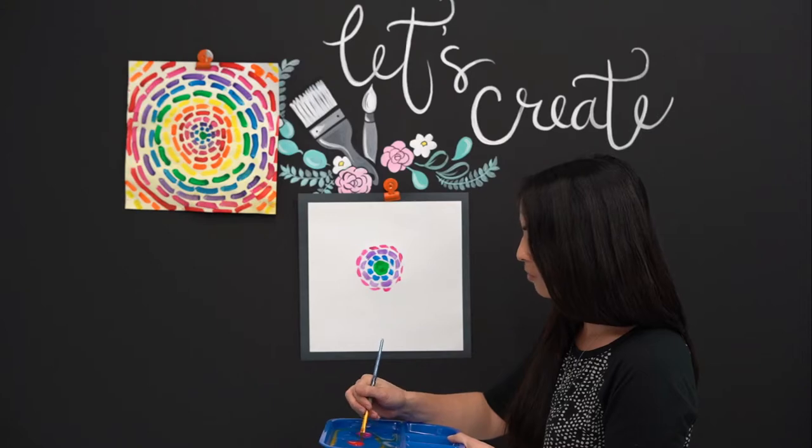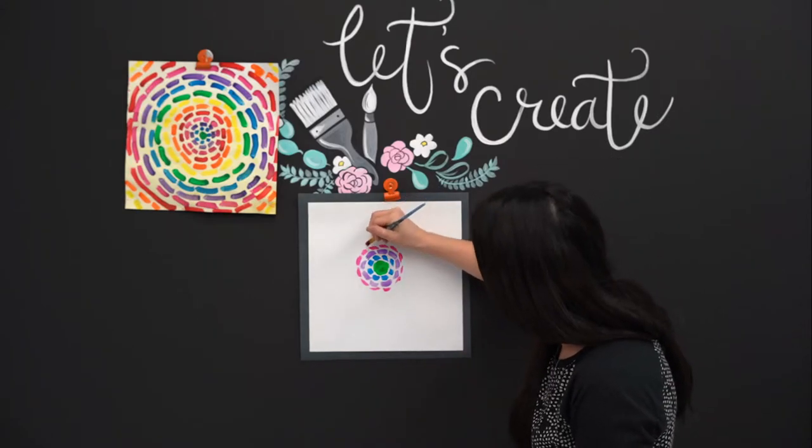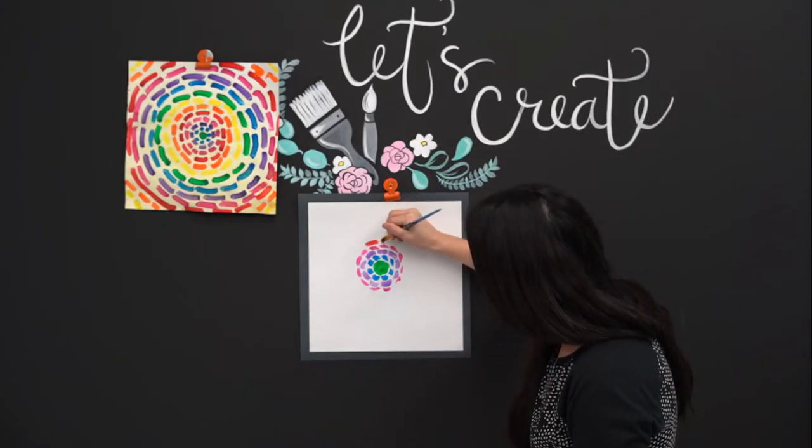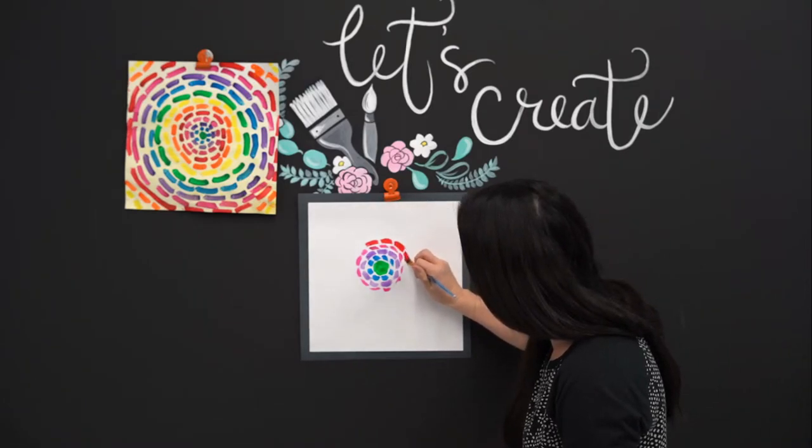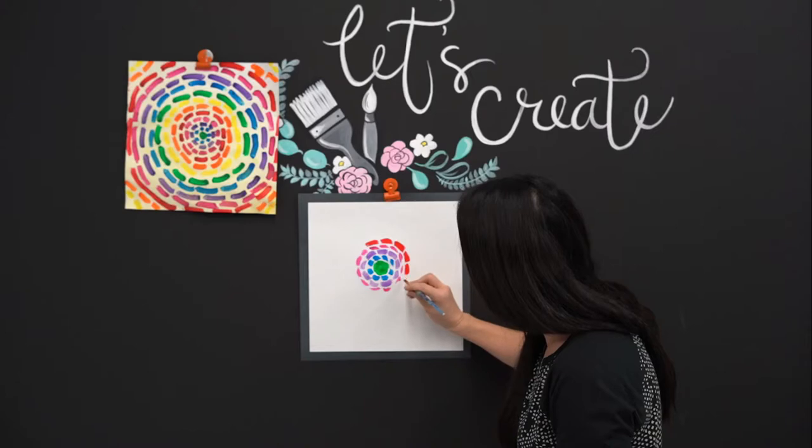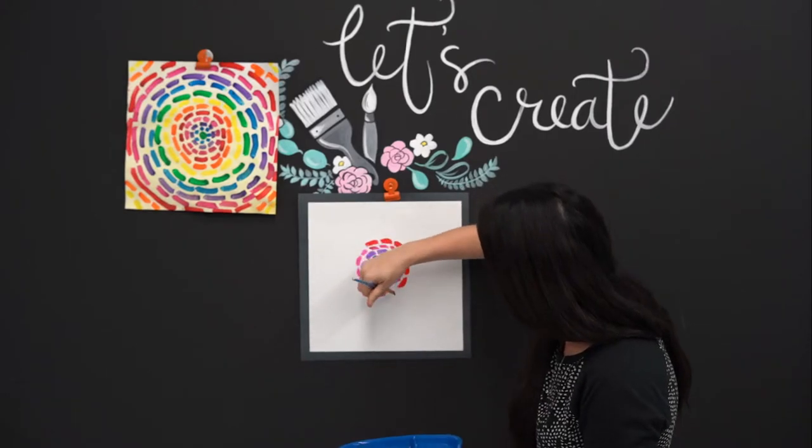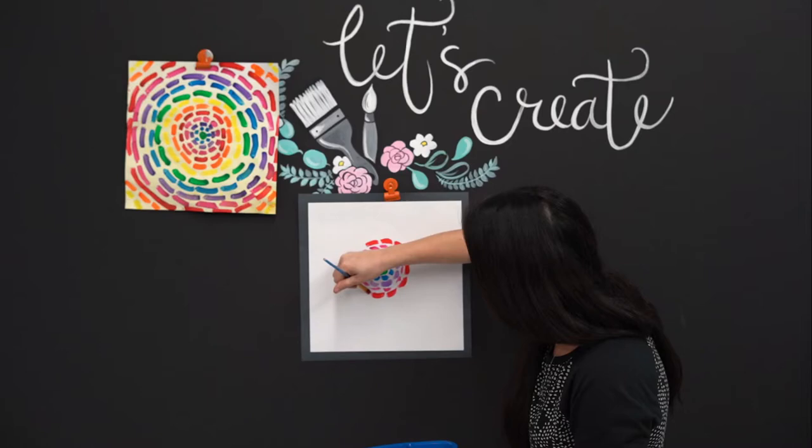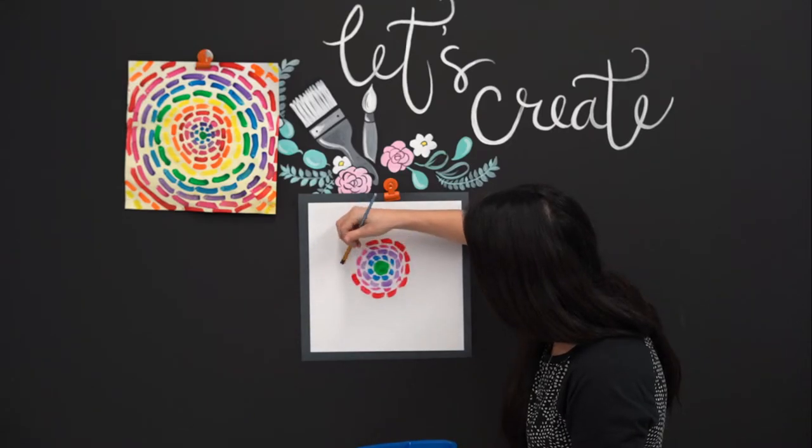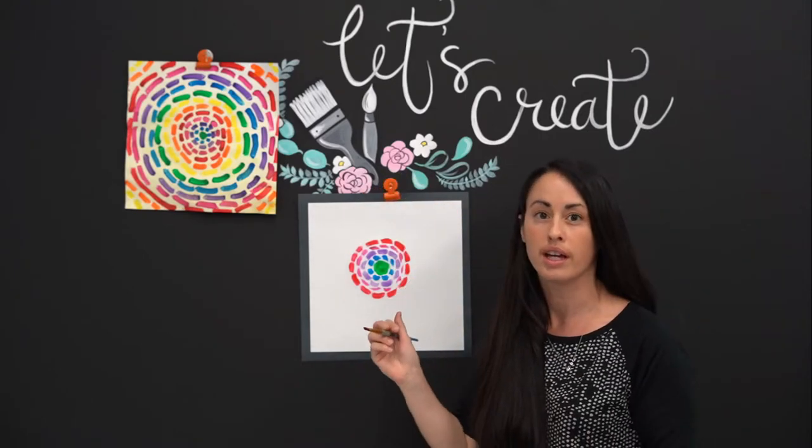Alright, we're moving on after pink. Here comes red. This is a great project for little ones too, because you can talk about colors, do color recognition. They can practice painting, keeping control of their paintbrush. So it's really a great project for all ages.